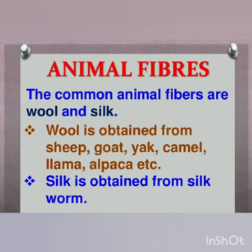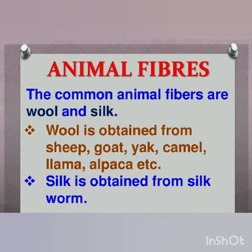The most common animal fibers that we use are wool and silk. Wool is a fiber mainly obtained from the hair of sheep, but it can also be obtained from the hair or fur of goats, camels, rabbits, and a few more animals. Whereas silk is obtained from the cocoons of the silk moth.